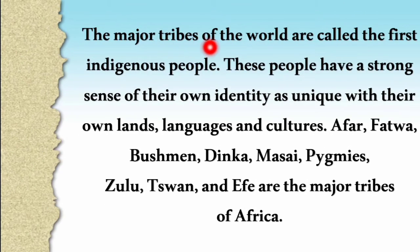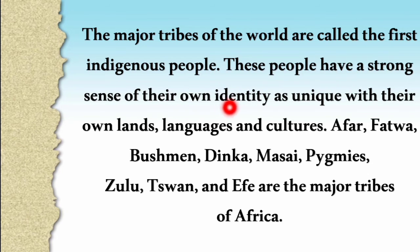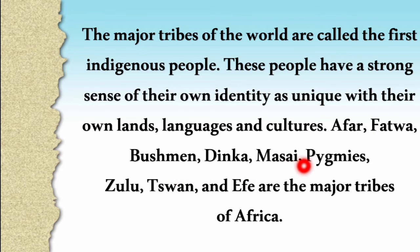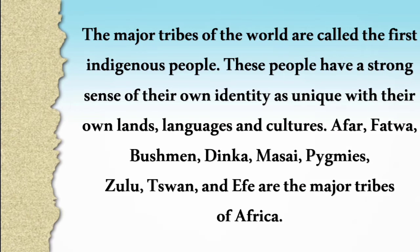The major tribes of Africa are called the first indigenous people, with a strong sense of their own identity, lands, languages and cultures. Major tribes include Sohafar, Fatwa, Bushmen, Dinka, Masai, Pygmies, Zulu, Tswana and Efi.